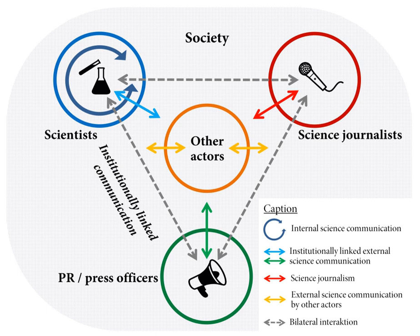Science communication is the public communication of science-related topics to non-experts. This often involves professional scientists called outreach or popularization, but has also evolved into a professional field in its own right. It includes science exhibitions, journalism, policy or media production. Science communication also includes communication between scientists, for instance through scientific journals, as well as between scientists and non-scientists, especially during public controversies over science and in citizen science initiatives.